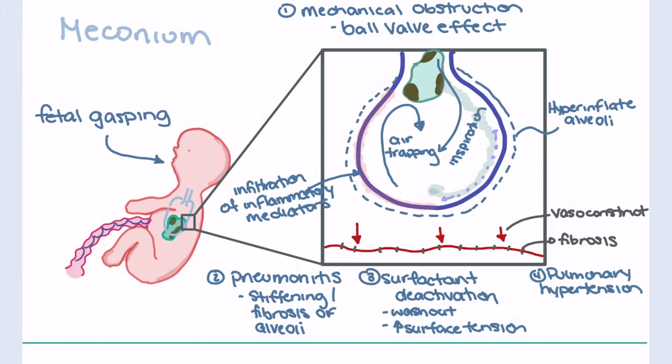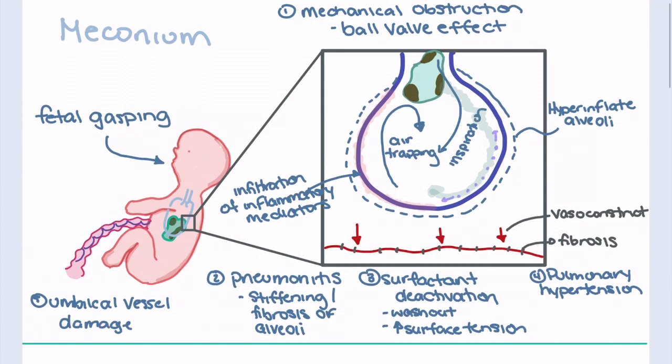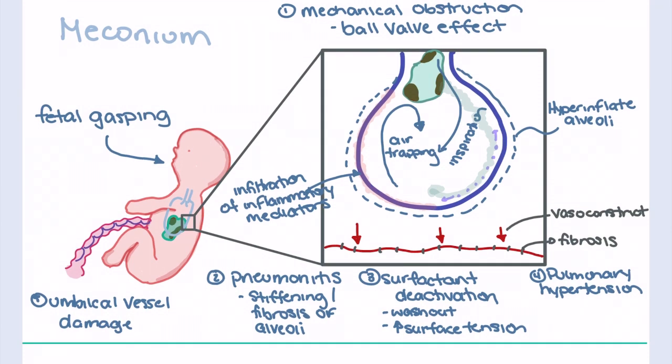The final consequence of meconium release in utero is not as much related to aspiration as it is to the effects of meconium on the umbilical cord. Through stimulation of inflammation as well as vasoactive principles of meconium, we see damage to the umbilical cord itself.